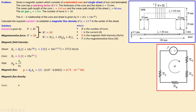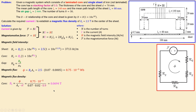For the core, B_core = φ divided by the effective core cross-sectional area. Because of the lamination we must include the stacking factor of 0.9, so the effective area equals 0.02 × 0.07 × 0.9. Substituting the values gives B_core = 0.0694 tesla for the magnetic flux density in the core.